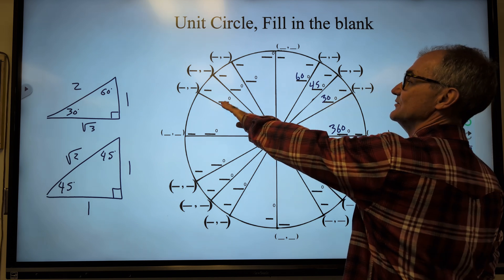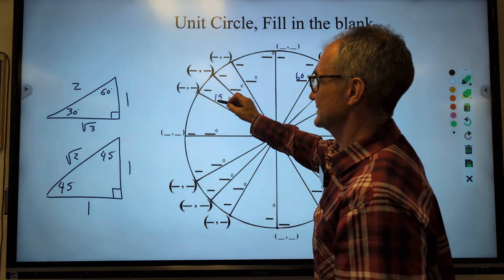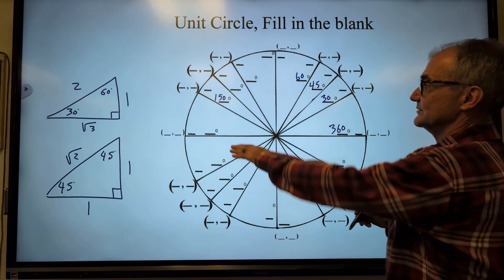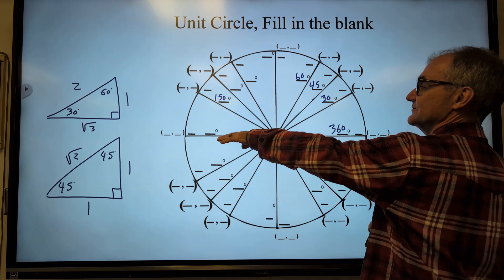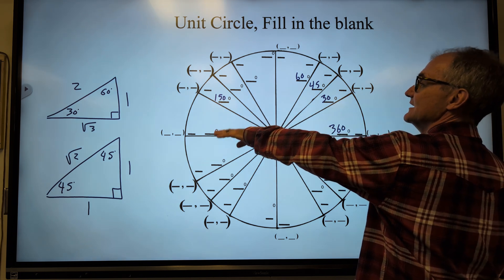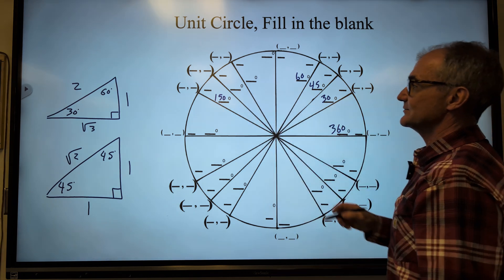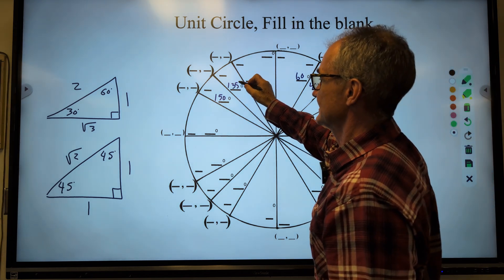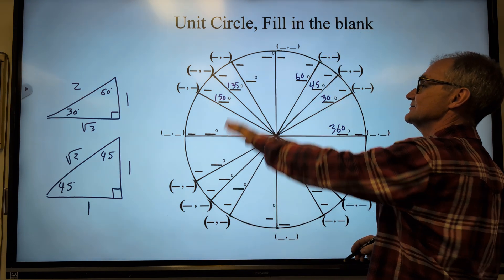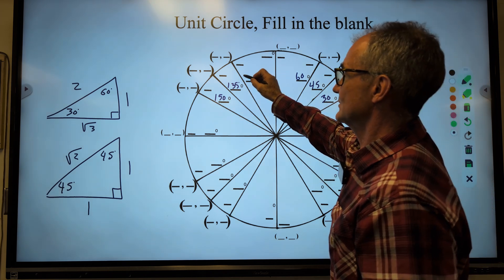So this one would be 30 units up, which would be 150. This one would be 45 degrees up, or 135. This one would be 60 degrees from 180, or 120. And then up at the top is 90.